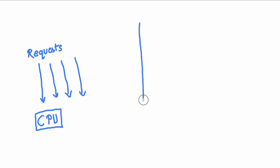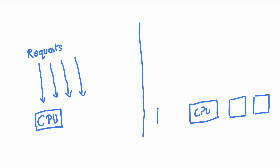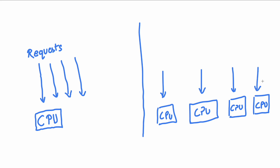The another possibility here is — obviously most of you might be thinking that we can increase the number of CPUs. So that is totally fine. Let's suppose we are increasing the number of CPUs — for four requests I'll be having a system with four CPUs and I'll be assigning each request to each CPU. So that way I can achieve the performance boost that I was looking for, because each and every request is going to a different CPU. There is no context switching, there is no overburden on the CPU — all are happy.